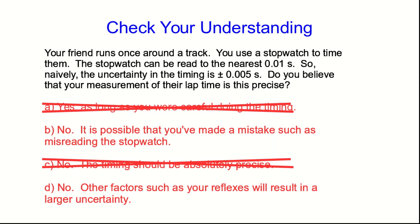It's also not B. The uncertainty or the precision in the measurements has nothing to do with mistakes. We're going to assume that all our measurements are correct. That's another reason we make multiple measurements. It helps us catch our mistakes.